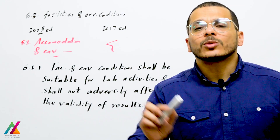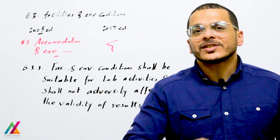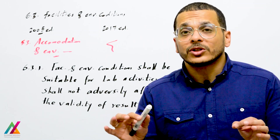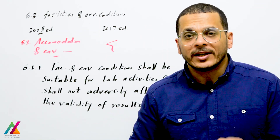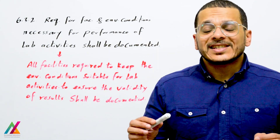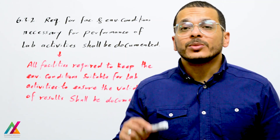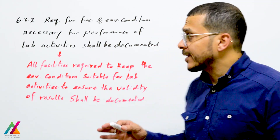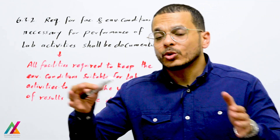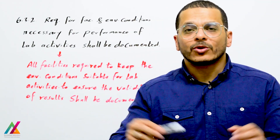Facilities and environmental conditions shall be suitable for lab activities and shall not adversely affect the validity of results. Requirements for facilities and environmental conditions necessary for the performance of lab activities shall be suitable and well controlled. This clause addresses the facilities required to keep environmental conditions suitable for lab activities.